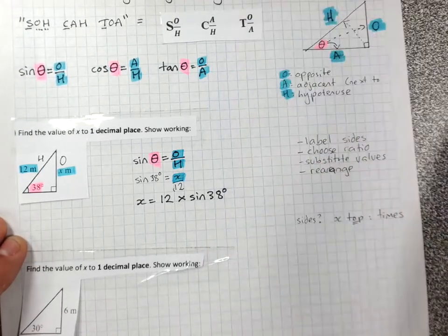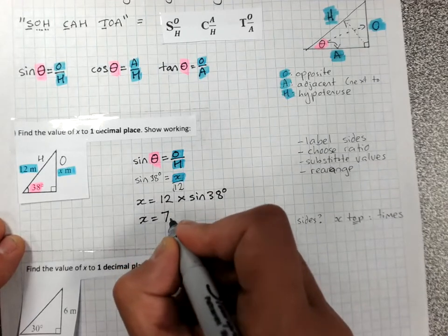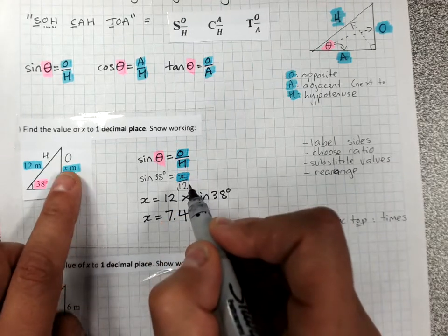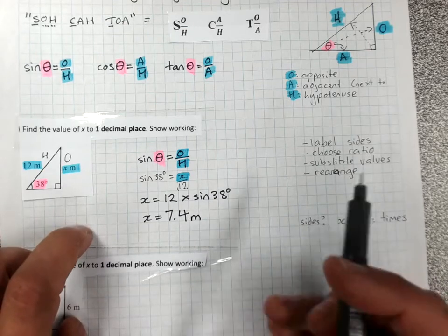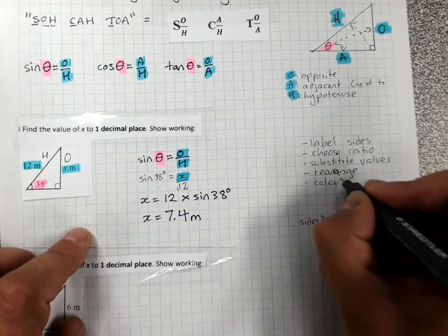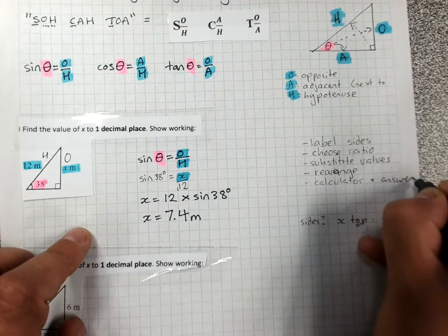We'll go to one decimal place. So, we write x equals 7.4. It was meters here, because we're still going with blue. So, we have meters there. So, once we've rearranged, calculator and answer.